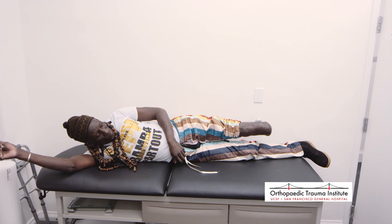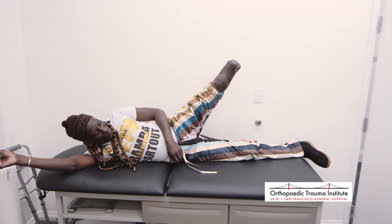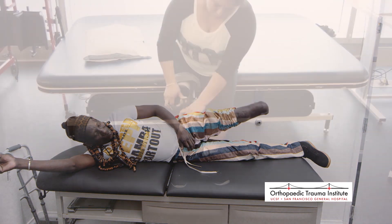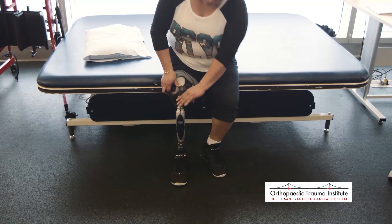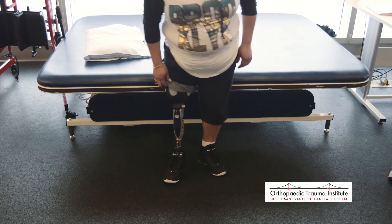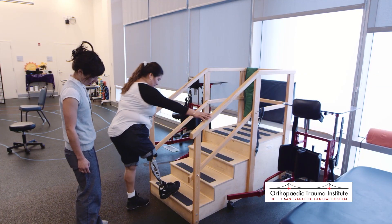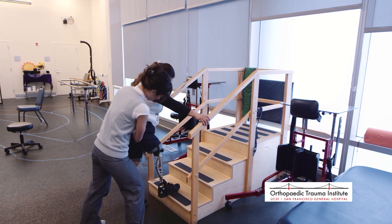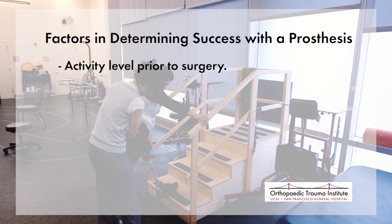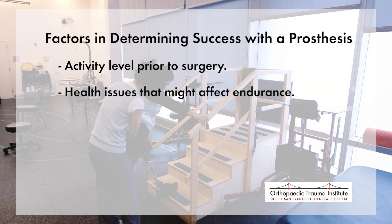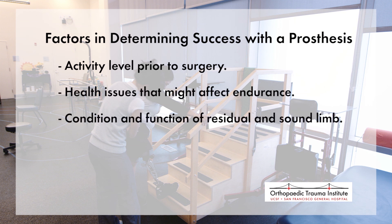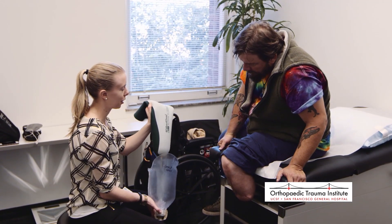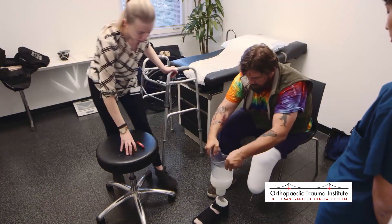After returning home, further occupational or physical therapy might be prescribed. From the time of surgery, and sometimes even before, the rehabilitation team will closely monitor your progress to determine the potential for you to use a prosthesis. Other factors considered include your activity level prior to surgery, other health issues that might affect your endurance, the condition and function of your residual limb and sound limb, and your own personal goals.